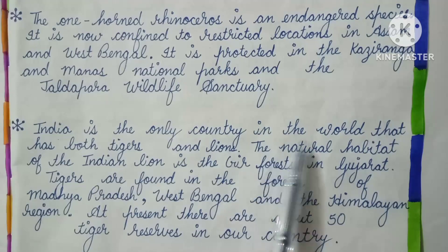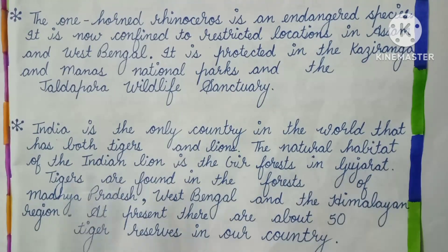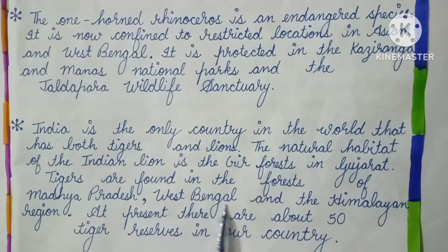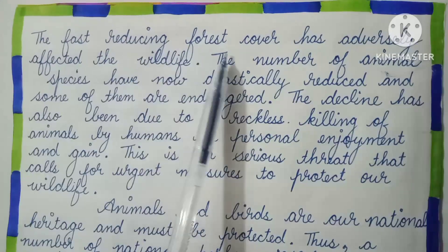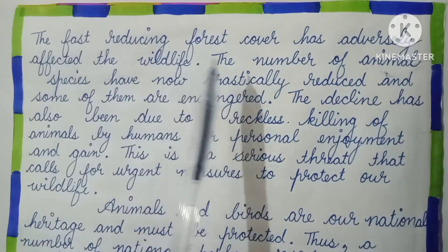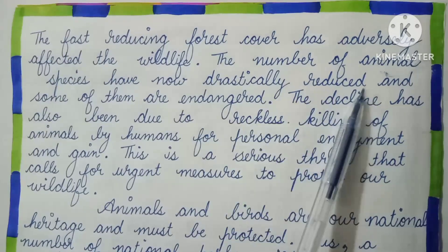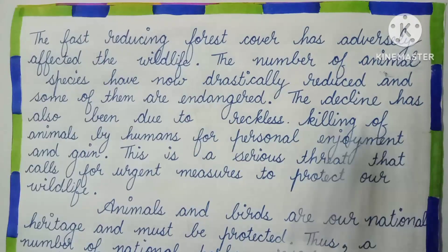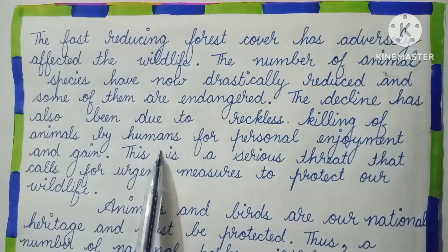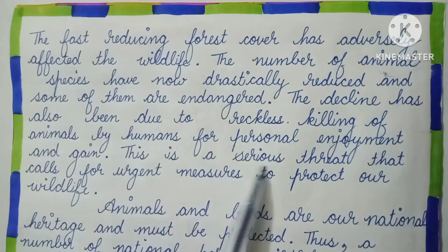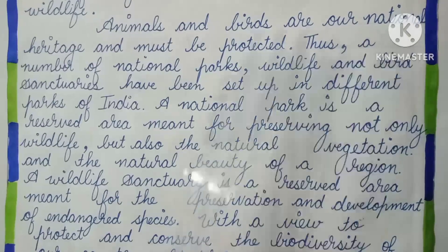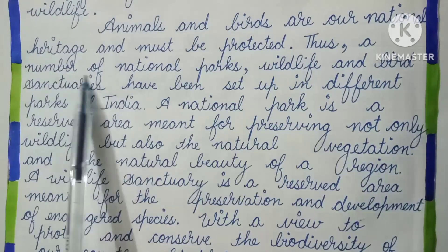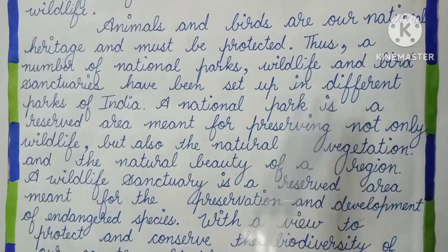India is the only country in the world that has both tigers and lions. The natural habitat for the Indian lion is the Gir Forest in Gujarat. Tigers are found in the forests of Madhya Pradesh, West Bengal and the Himachal region. At present, there are about 50 tigers preserved in our country. The fast-reducing forest cover has adversely affected wildlife, and the number of animal species has drastically reduced, with some now endangered. The decline has also been due to reckless killing by humans for personal enjoyment and gain. This is a serious threat that calls for urgent measures. Animals and birds are our national heritage and must be protected. A number of national parks, wildlife and bird sanctuaries have been set up in different parts of India.